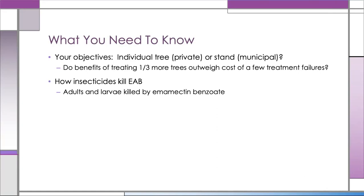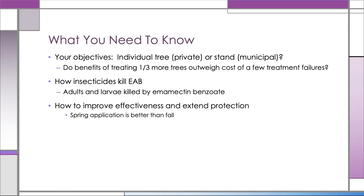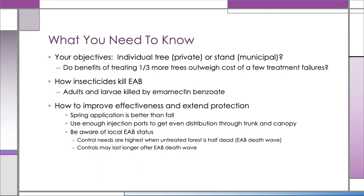You also need to understand how the insecticides kill Emerald Ash Borer. Both the adults and the larvae need to be killed in order to get effective control with emamectin benzoate. To improve effectiveness and get that three-year benefit, spring applications will give you much better results than fall applications. You need to use enough injection ports to ensure even distribution of product through the trunk and canopy. And you need to be aware of the local EAB status — your control practices have to be impeccable at the peak of the infestation, when the untreated forest around you is about half dead. After the death wave has passed, the controls may last a little bit longer.